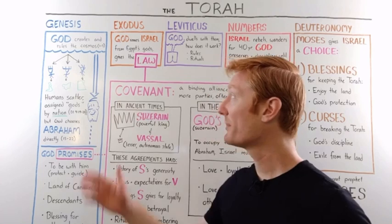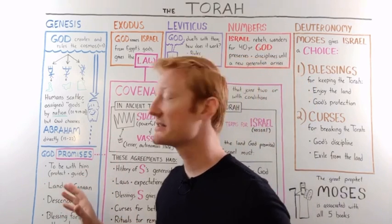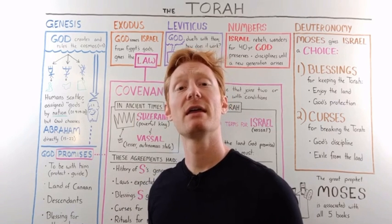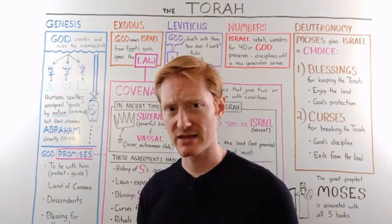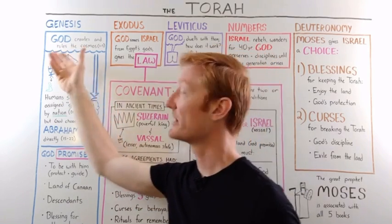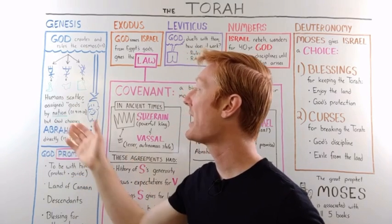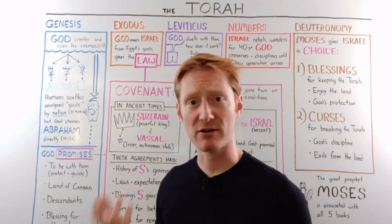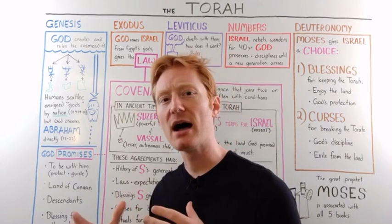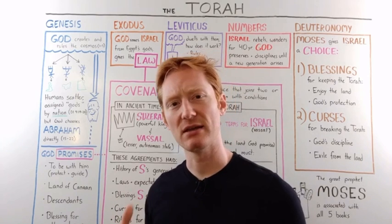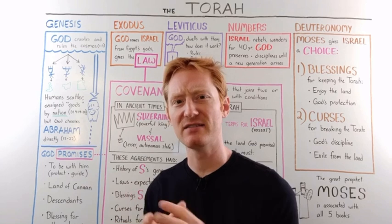The Torah begins with Genesis. From a high-level view, Genesis gives us the origin stories of Israel's relationship with God and their ancestors. In the first half of Genesis, we see God creating and ruling the cosmos. And then by the time we get to an event known as the Tower of Babel, we see the relationship between God and humanity, and also the relationship between God and other spiritual beings, in a state of disintegration.